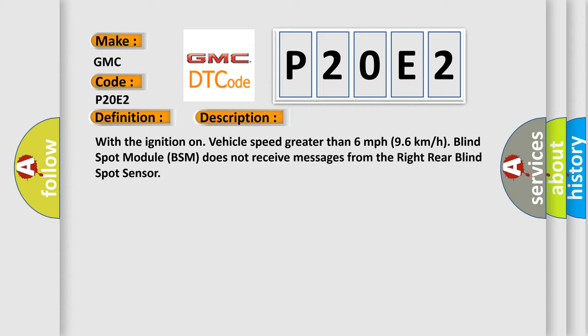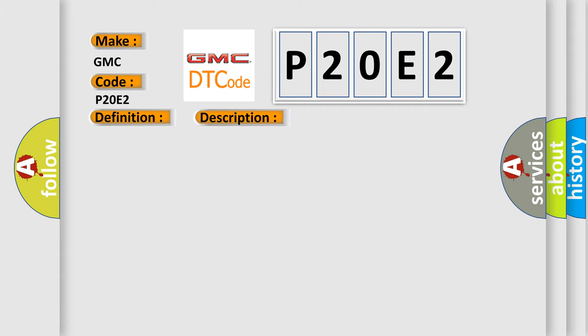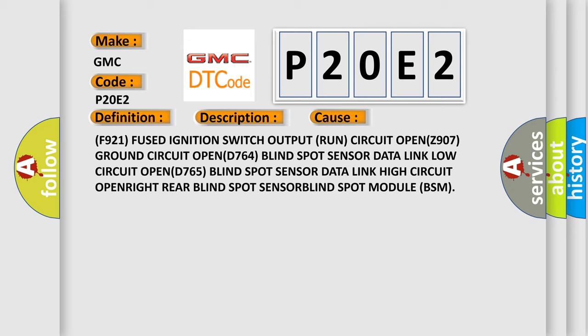This diagnostic error occurs most often in these cases: F921 fused ignition switch output run circuit open, Z907 ground circuit open, D764 blind spot sensor data link low circuit open, D765 blind spot sensor data link high circuit open, right rear blind spot sensor, or blind spot module BSM.